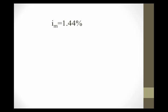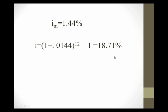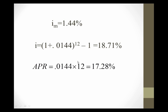From there we can calculate the effective annual interest rate. If 1.44% is the monthly interest rate, we compound it every month and we get an annual interest rate — the effective annual interest rate — which is 18.71% in this example. If we just took 1.44% and multiplied by 12, we get the APR approximation, which is significantly lower at 17.28%. The effective annual rate reflects the true cost of financing because it captures the compounding of interest on the unpaid balance. The APR understates the true cost of financing.